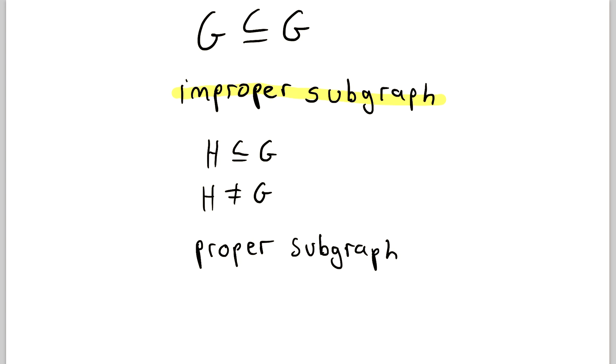One other thing I'll mention is that by definition of a subgraph, every graph G is a subgraph of itself. And in particular, we can say that every graph is an improper subgraph of itself, because it is equal to itself. But if we have a graph H that's a subgraph of G, and we know that H is not equal to G, then we can say that H is a proper subgraph of G. This is the same sort of terminology that we use for proper and improper subsets.